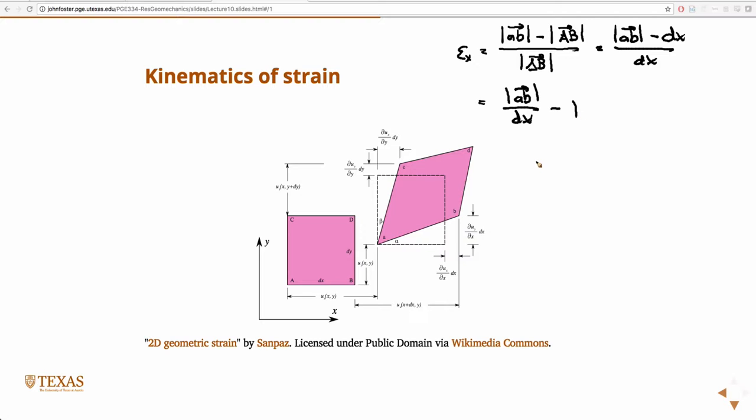So, if we just write down, it may be easier to just, remember, a vector is, the vector that we're talking about, AB, is the position of B minus the position of A.